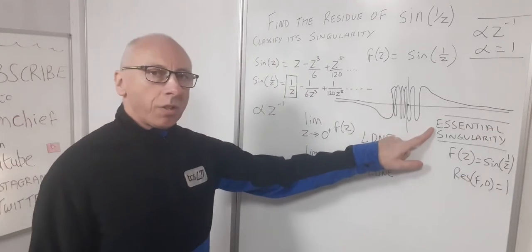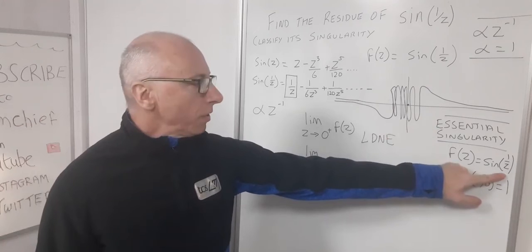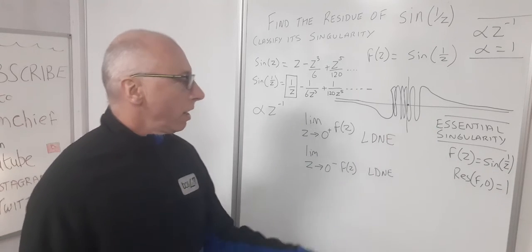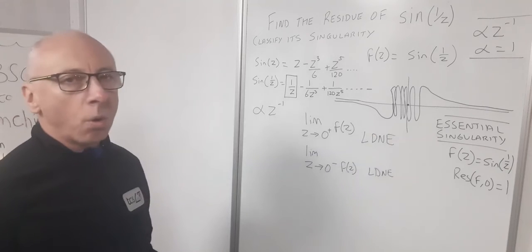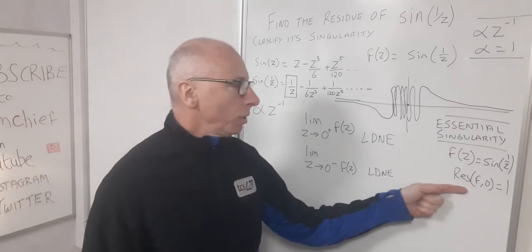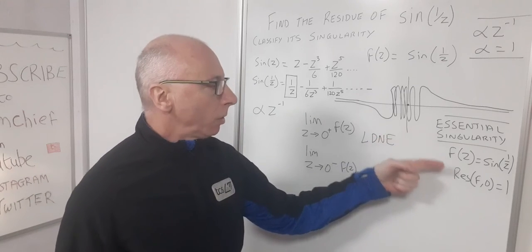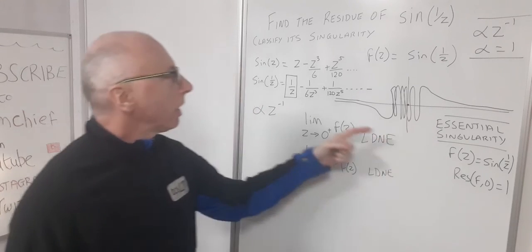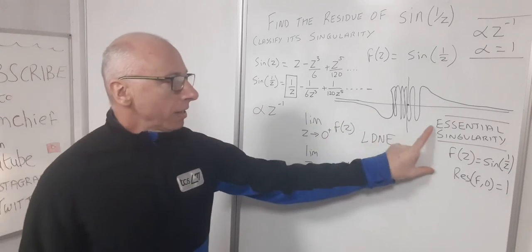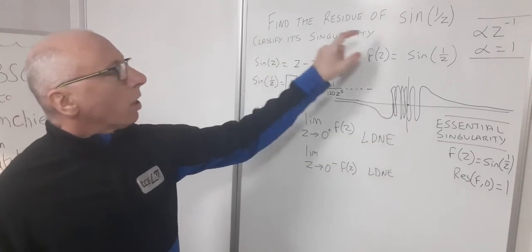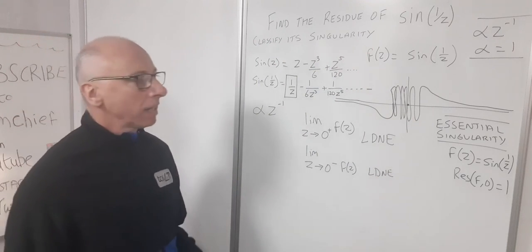Using the theory that the limit does not exist at zero for sin(1/z), we say this is an essential singularity — it is neither removable nor a pole. Our residue at zero is one, as determined from the Laurent series. That is our conclusion: the residue of sin(1/z) is one, and the singularity is classified as an essential singularity.